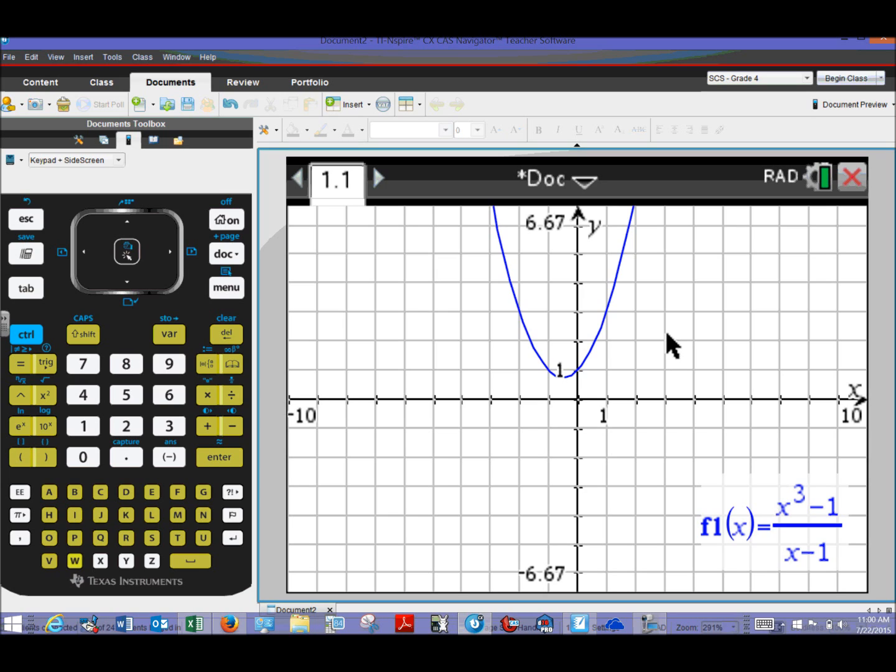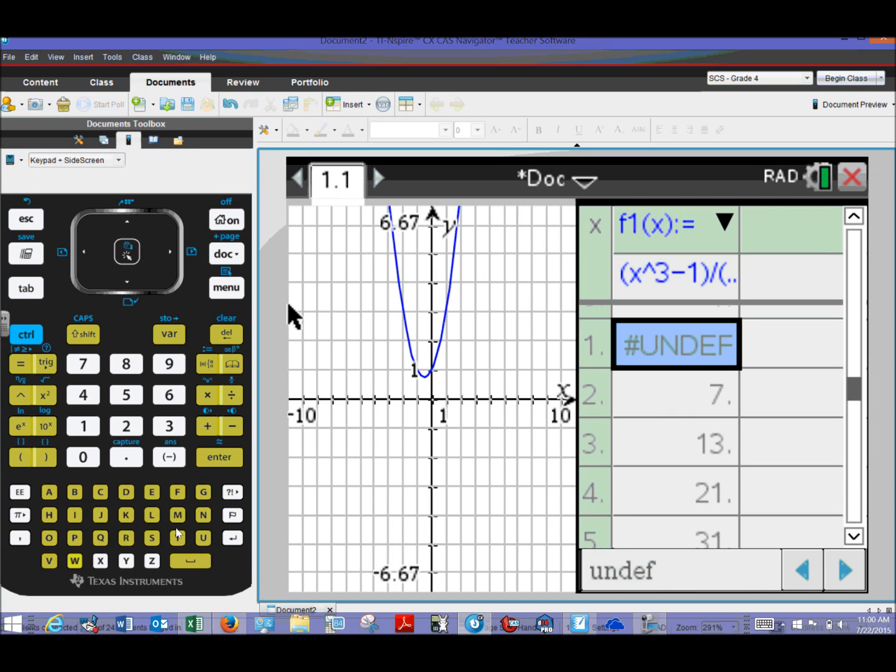All right. So now let's go ahead and try to build a T chart. And the cool way to do that with the TI Inspire is by the shortcut Control T. There's other ways to do that. But Control T for table does a great job. And you can see your graph and your table side by side. But there is a problem.